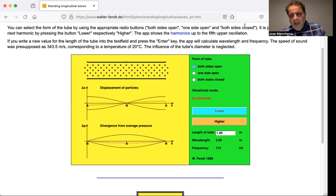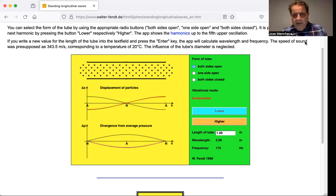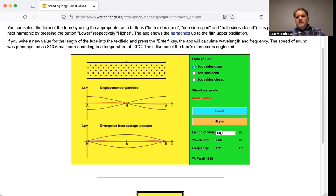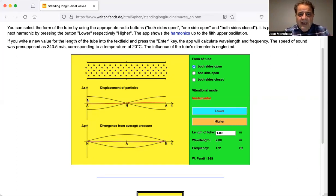I think he has a better presentation. He even has the length of the tube and gives you the wavelength and the frequency. Notice the length of the tube is one meter and the wavelength is two meters. Why? Because this is only a half wave.